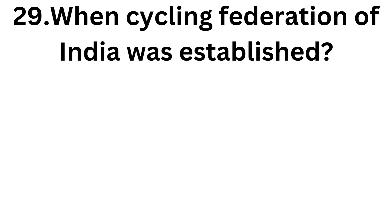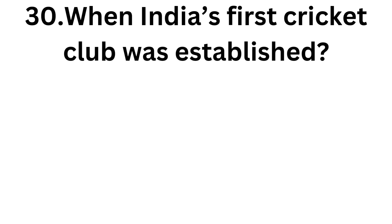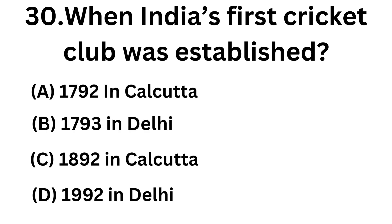The twenty-ninth question: when was the Cycling Federation of India established? The answer is 1946. The thirty-sixth question: when was India's first cricket club established? The answer is 1792 in Kolkata.